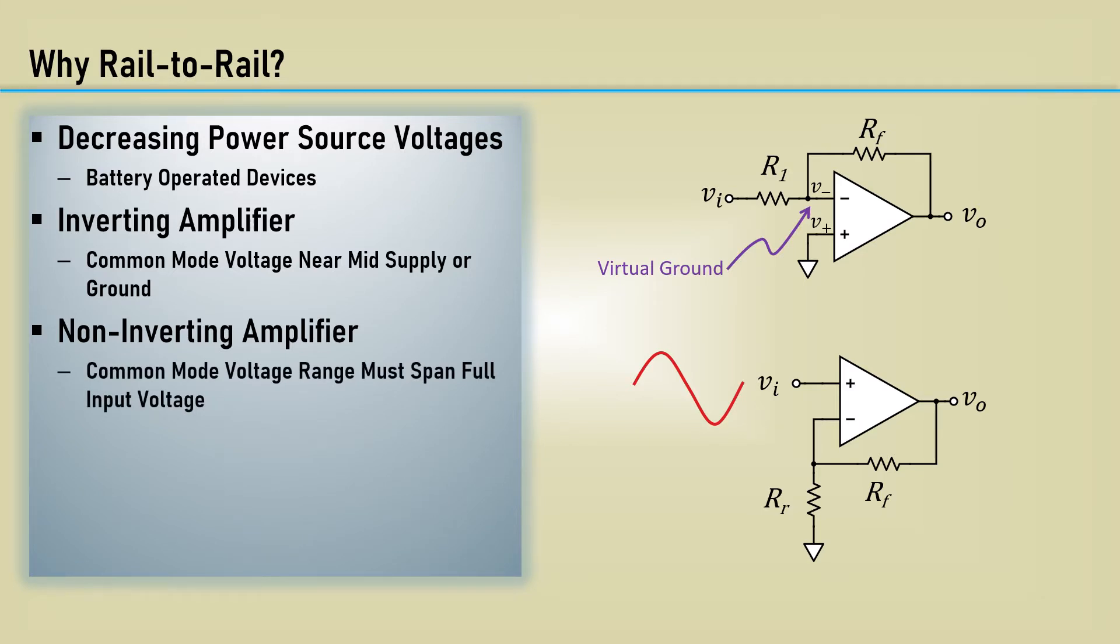A distinction is made between the devices that have rail-to-rail inputs, or RRI, and rail-to-rail outputs, or RRO.